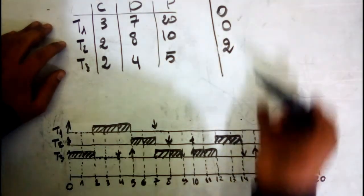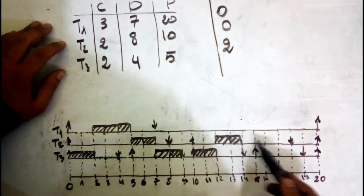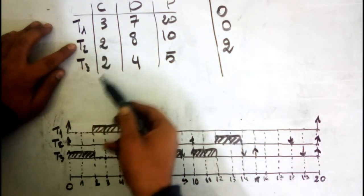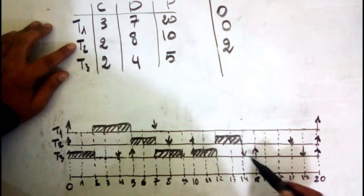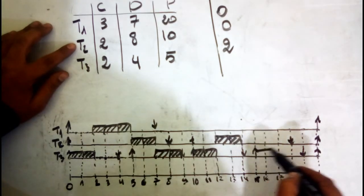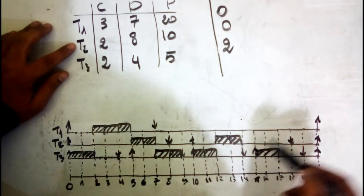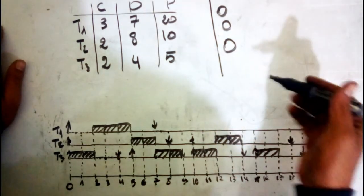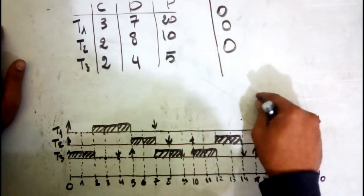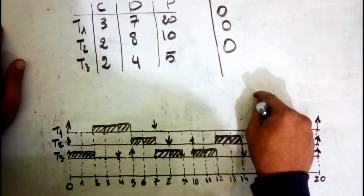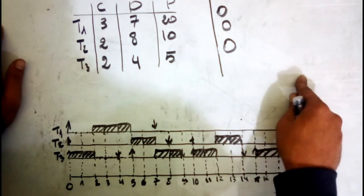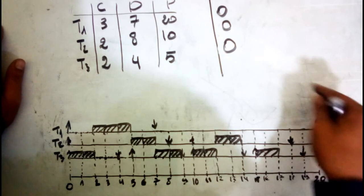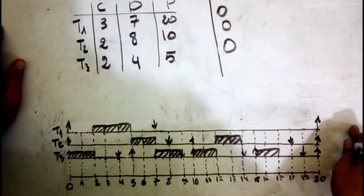At time 15, we have only T3 because T1 and T2 periods have ended. We run those two remaining units for T3. That's it for this example. If you want to see my next example or a C program implementation of this algorithm, check the descriptions below. Please subscribe to my channel — thank you for watching.